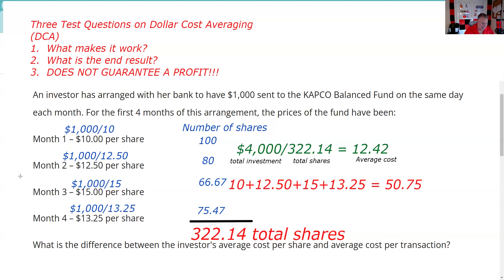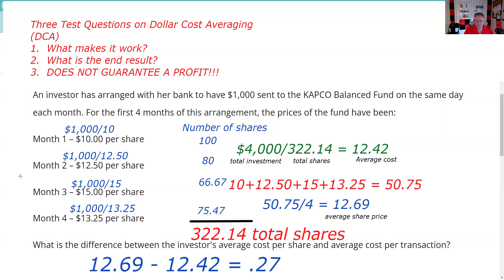To find the average share price, we total the four prices and divide — as I always joke, if you can't decide what to do, divide, because most of the test is division. We total those four prices and divide: the average share price was $12.69. This test question appears on the SIE, Series 7, Series 65, Series 66 — all the exams. The average cost was $12.42, the average share price was $12.69, and so the difference is 27 cents.